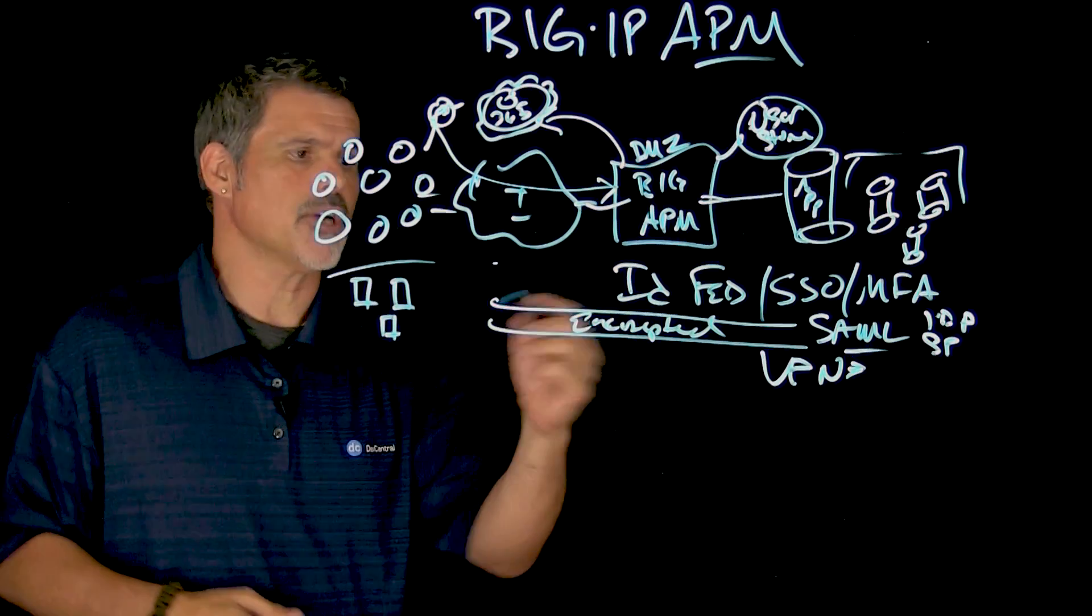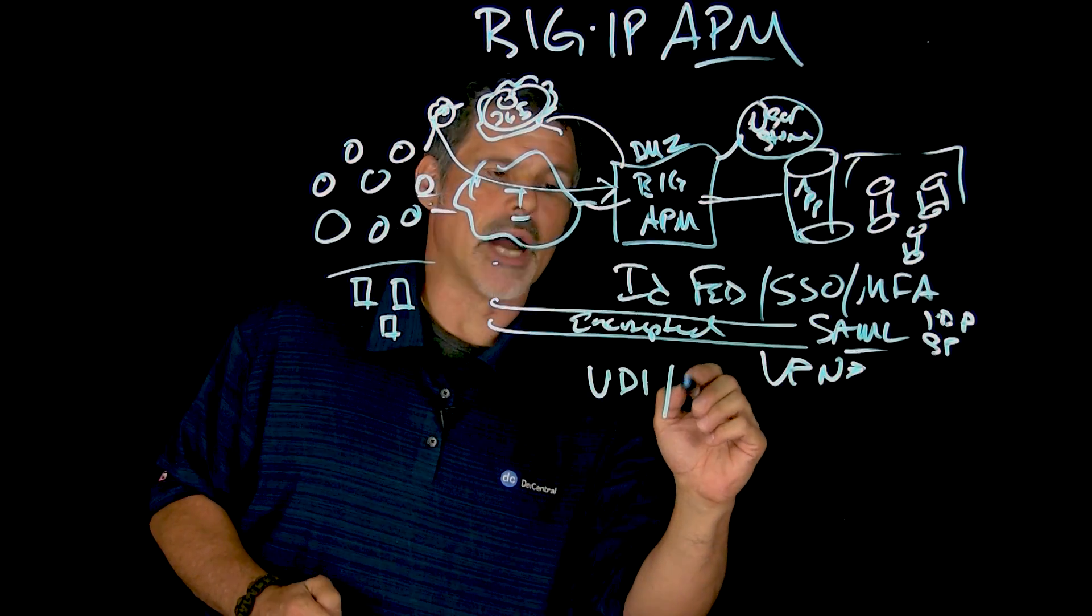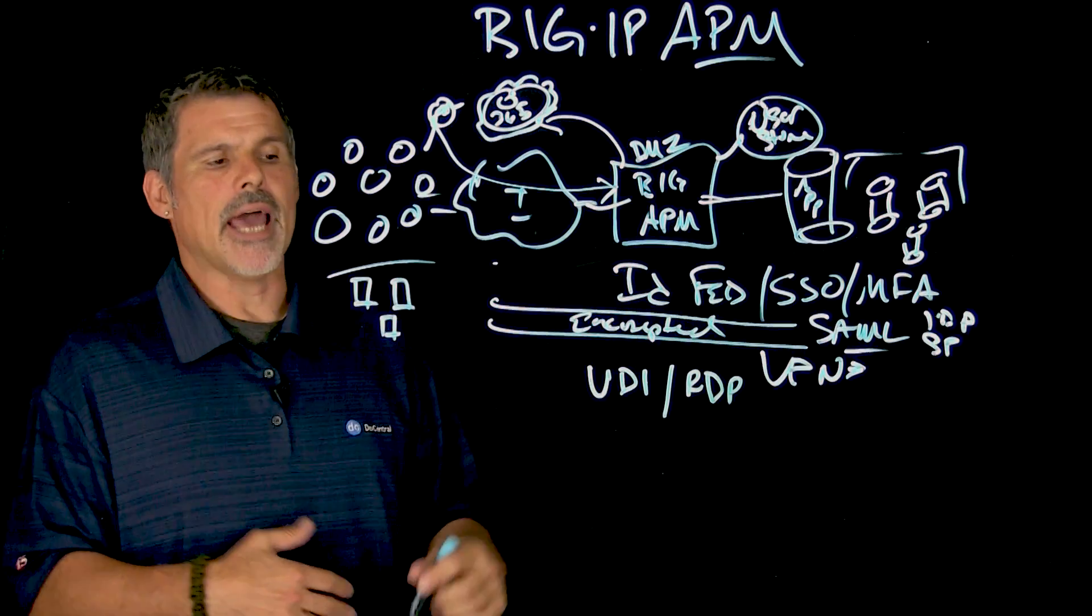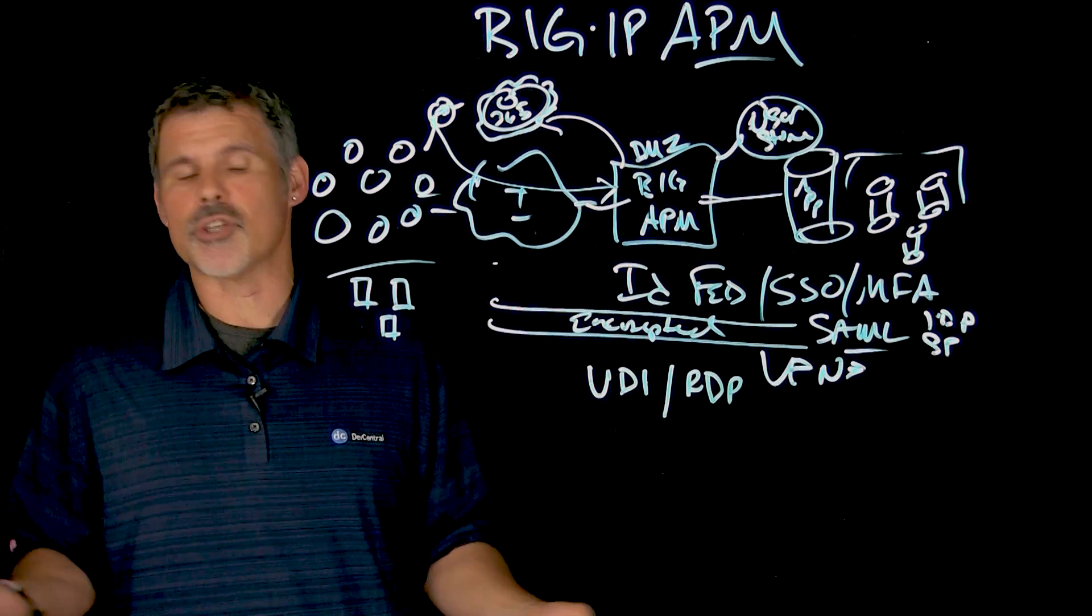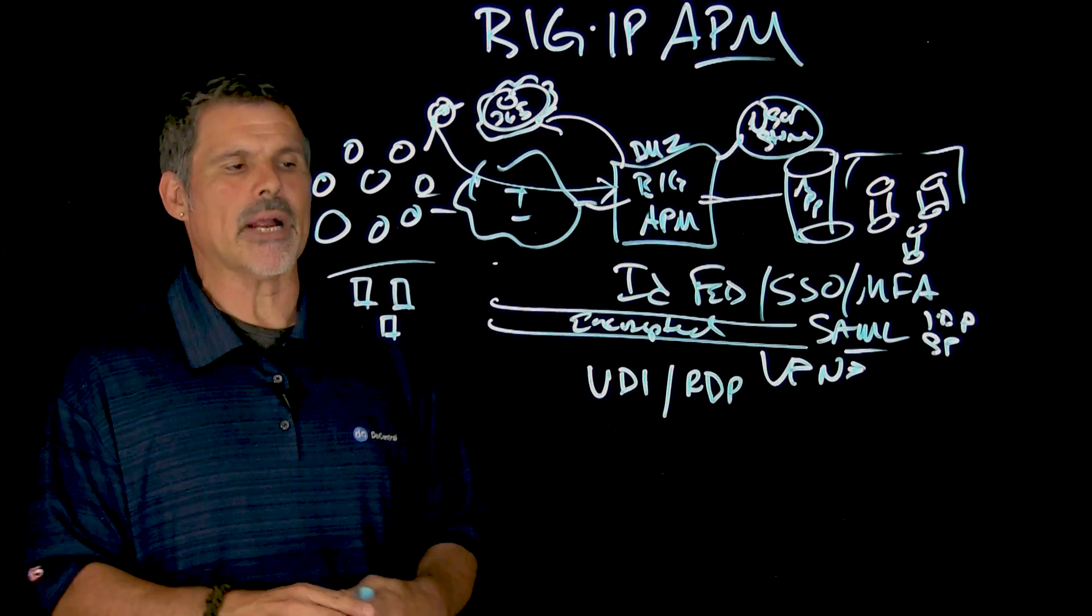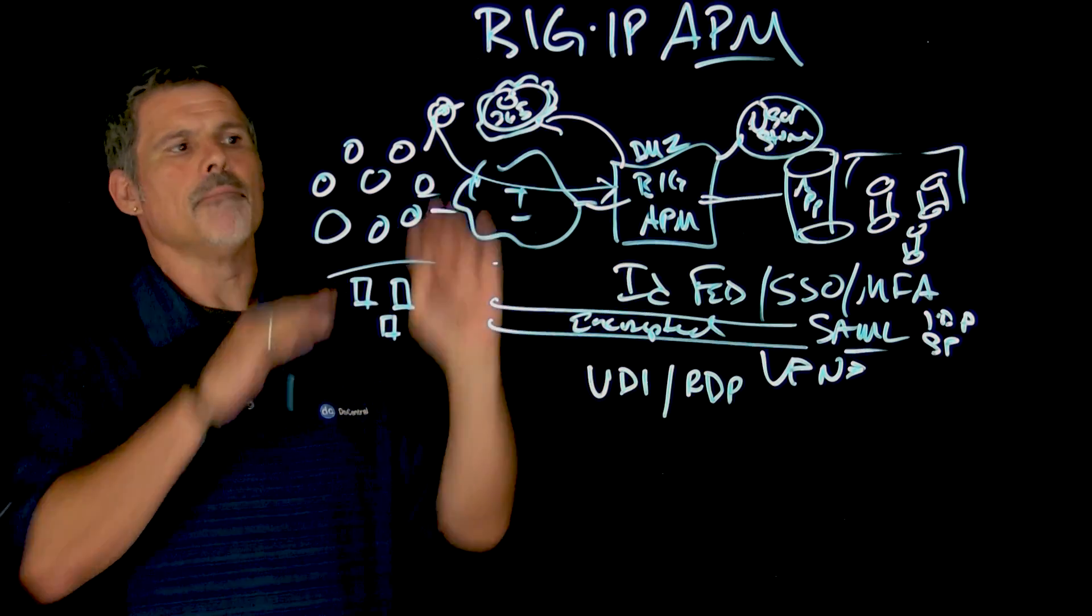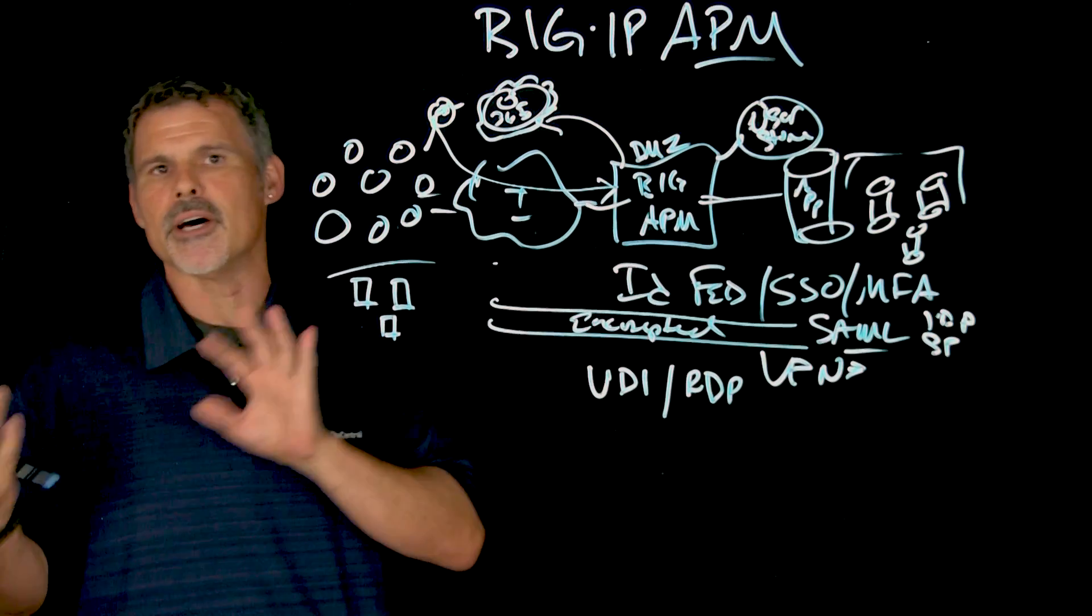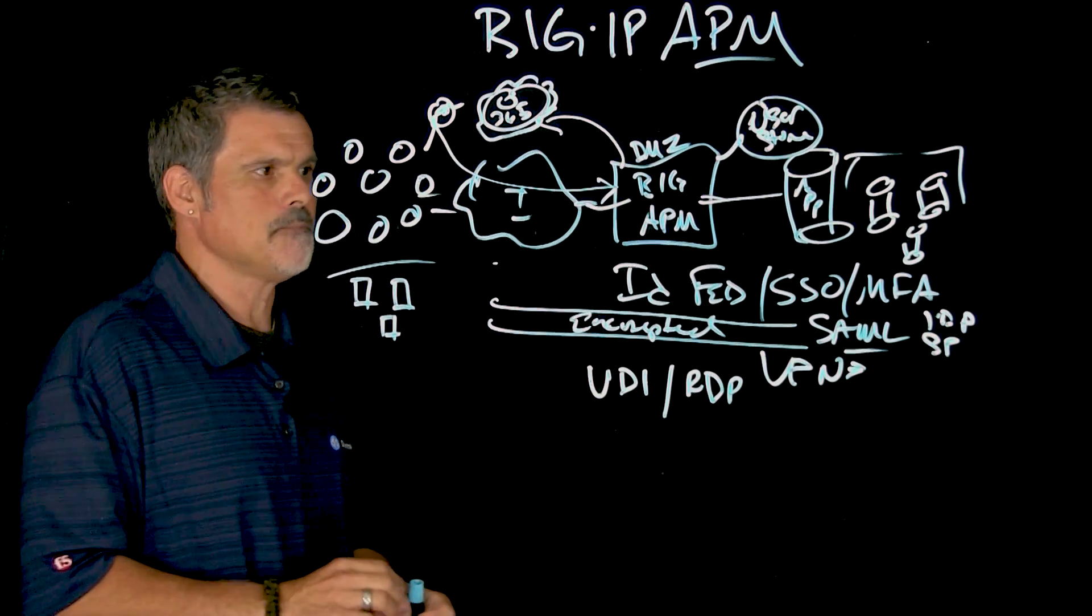Big IP access policy manager can also provide access to VDI resources or remote desktops, RDP, remote desktops, and proxy your VDI installment on the back end. And it doesn't matter if it's Citrix or VMware or Microsoft, we can handle all of those with our full proxy architecture. And remember, Big IP APM is on a Big IP platform with a TMOS-based operating system and is a full proxy architecture.